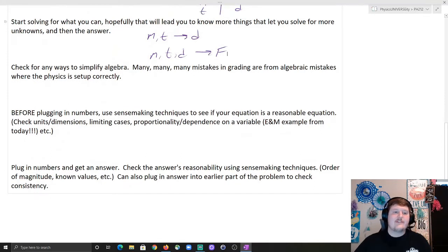Okay, after that, check for any ways to simplify the algebra. Most mistakes that we get when we're grading are from algebraic mistakes where the physics is set up correctly. You've done the right equations. You've looked at the free body diagram correctly, what have you. But the actual simplification of the algebra and algebraic maneuvering has some issues, and that leads to an error in your answer. So just recheck your algebra, check what's going on, make sure there's no mistakes that you made. That'll save you a lot of points.